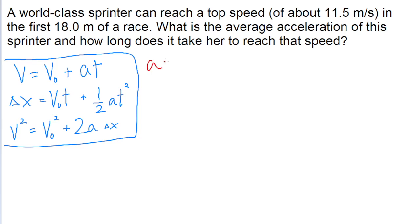So for us, the acceleration is the first thing we're trying to find. The distance traveled, delta x, is given as 18 meters. The final speed, post-acceleration, is 11.5 meters per second, and the initial speed of the sprinter is zero.